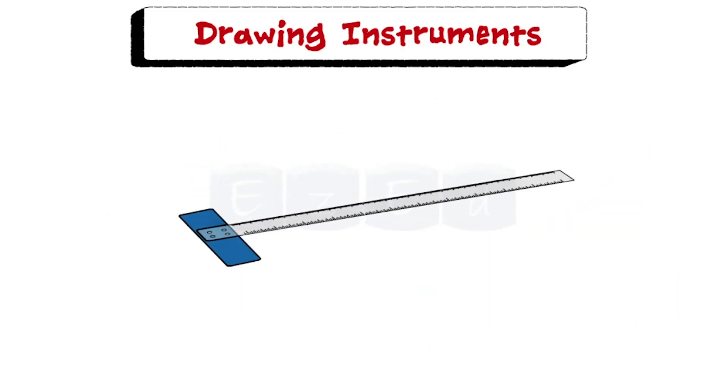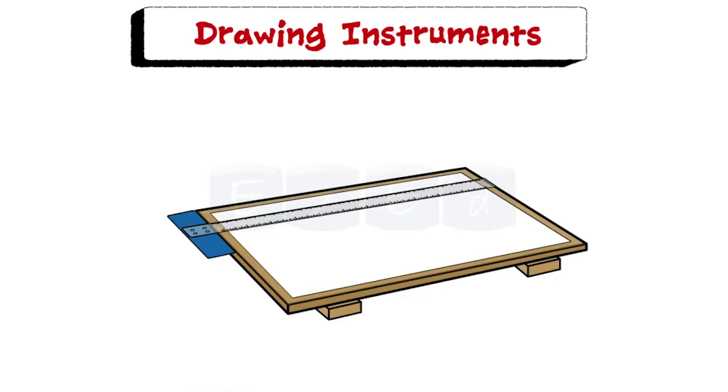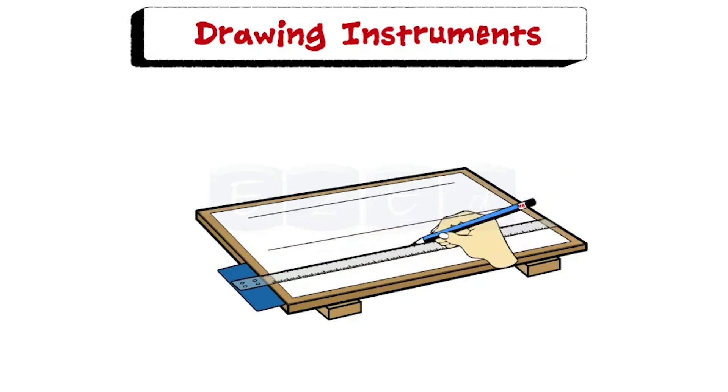Next is the t-square. It is made of two parts, the stock and the blade which are joined together at right angles by means of screws and pins. T-square is fitted at the side of the drawing board and it slides along the edge of the board and is used to draw horizontal straight lines.